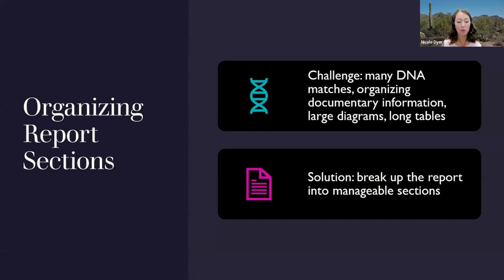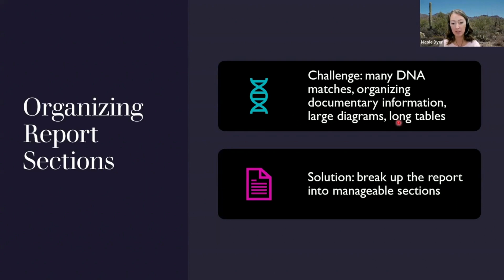When thinking about organizing research report sections, one challenge is that we might have many DNA matches. We also have to think about organizing documentary information and whether to weave it into the DNA evidence or present all the documentary evidence first and then the DNA evidence second. We might have large diagrams or really long tables. One challenge with long tables is that it's difficult for a reader to digest them when they extend beyond one or two pages. If the table goes on so long that you can't see the header data or it's just too difficult to understand what the table is showing, we need to be careful with that.